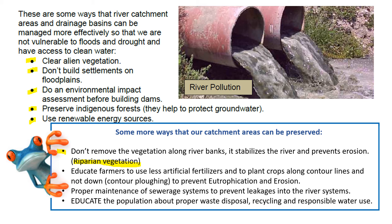Eutrophication is something we want to prevent. It occurs through overuse of fertilizers: these wash into the water systems, and if there are too many nutrients in the water, algae grows and uses all the oxygen, killing off the whole aquatic ecosystem. Erosion also happens where contour ploughing is not practised. Proper maintenance of sewage systems is essential. And educating the population — the more we educate people, the fewer problems there will be with waste disposal.